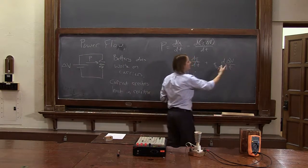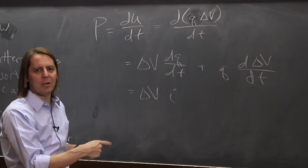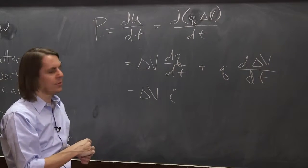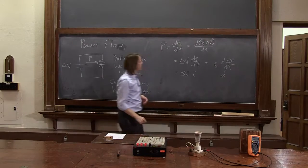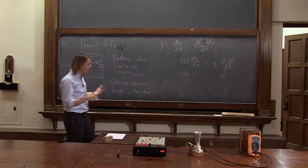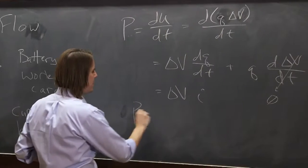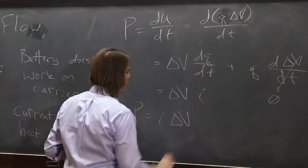And then here, d delta v dt, well, delta v is a constant. That's the battery applied, or that's the potential difference applied by the battery. So this is zero. So we see that the work, or the power by the battery, p is i delta v.